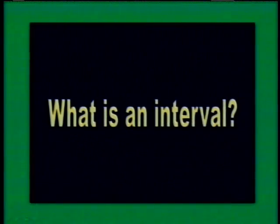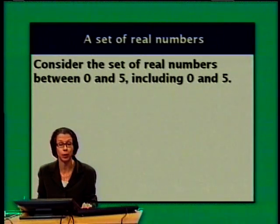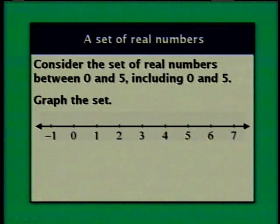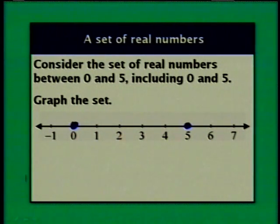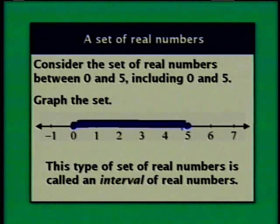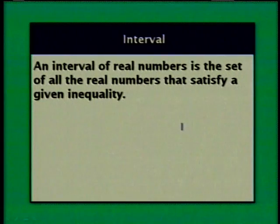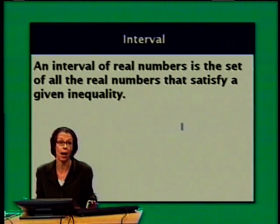Let's discuss what exactly an interval is. Consider the set of real numbers between 0 and 5, including 0 and 5. Starting with a real number line, I place closed circles at 0 and 5 since both are included, then draw a line between them to indicate all numbers in between are also in the set. This is a picture of an interval of real numbers. Formally: an interval of real numbers is the set of all real numbers that satisfy a given inequality.